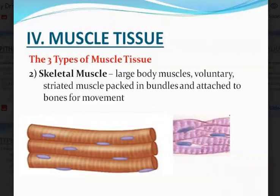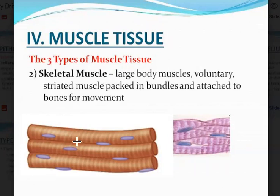The second type is skeletal muscle. Skeletal muscle has visible striations — fine structures running parallel to each other. The nucleus runs parallel to the outer surface of the skeletal muscle. They are large body muscle cells, voluntary, and striated muscles packed in bundles and attached to bones for movement — they move bony parts. For example, when you are walking, you use your skeletal muscles.